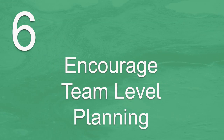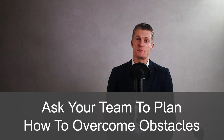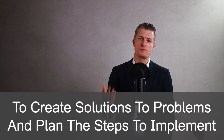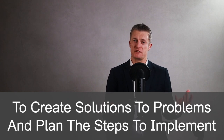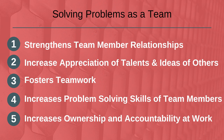The sixth factor in creating team accountability is to encourage team level planning. Do you try harder when it is your plan or when it's somebody else's plan? Ask your team to plan how to overcome obstacles, to create solutions to problems and to work out the steps needed to implement successfully. Working on solving problems together as a team firstly strengthens team member relationships, secondly increases appreciation of the talents and ideas of others, thirdly fosters teamwork, fourth increases problem solving skills of team members, and fifth increases ownership and accountability at work.